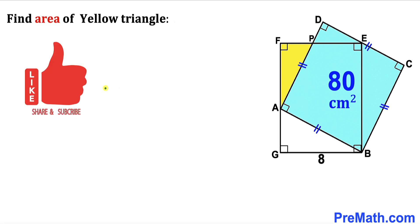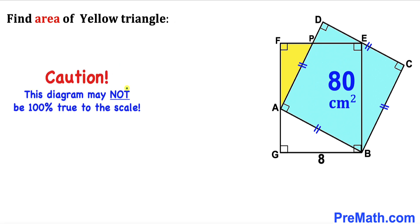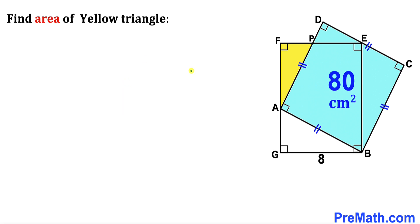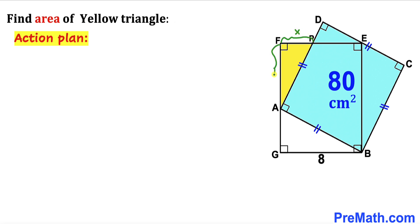Please don't forget to give a thumbs up and subscribe. Keep in mind that this figure may not be 100% true to scale. Let's get started. Here's our action plan: since we are interested in the area of the yellow triangle AFP, we must calculate its side lengths. Let me call side length FP as X and length FA as Y.